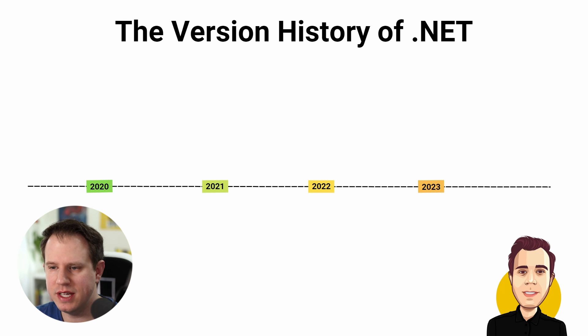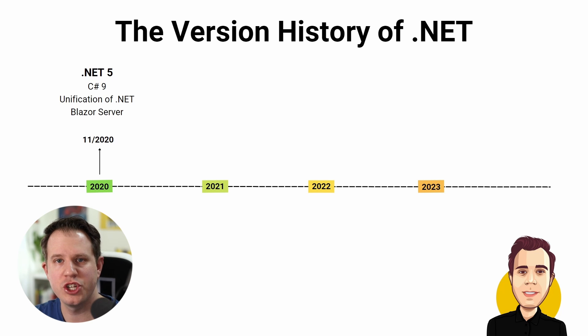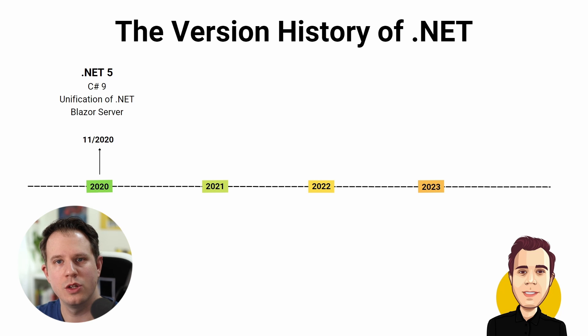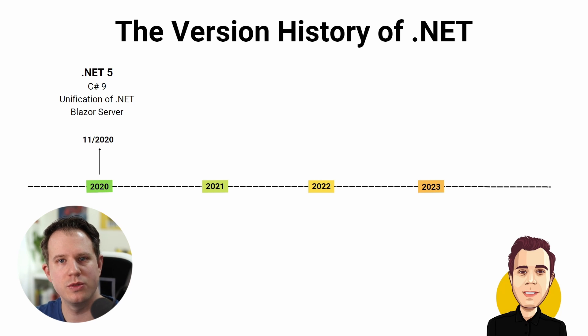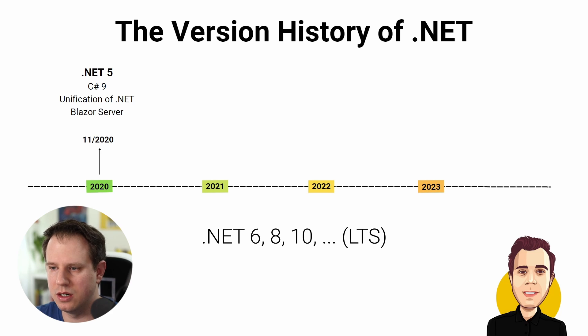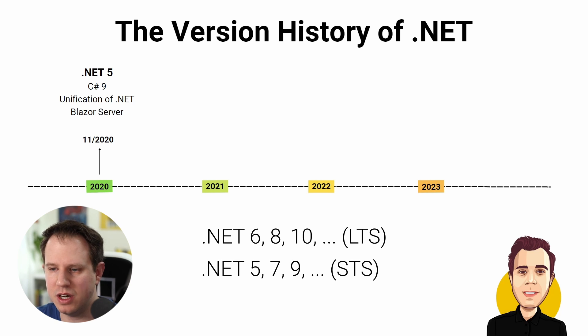.NET 5.0 was released on November 10th, 2020. The jump from version 3.0 to 5.0 was done to prevent mixing up version numbers between the .NET Framework and .NET Core. .NET 5.0 also brought C# 9, and it was the version where .NET Core was renamed to just .NET as we know it today. Since version 5, we get a new .NET and C# version every year — even numbers are long-term support releases with 3 years of support, and odd numbers are short-term support releases with 18 months of support.